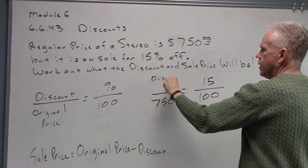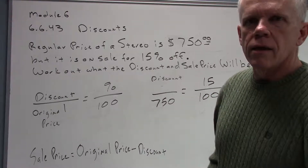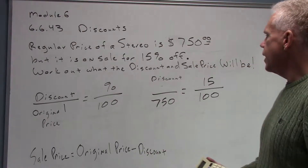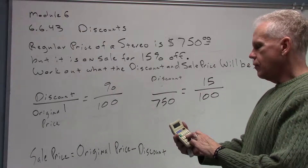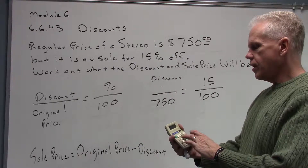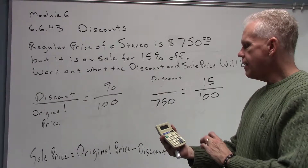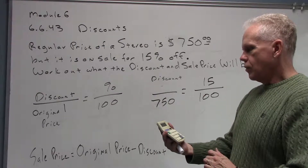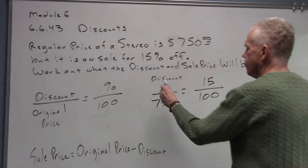To solve this proportion, our shortcut method is to cross multiply and divide. Using my calculator, I do 750 multiplied by 15, hit equals, then divide that answer by 100. I get 112.5.